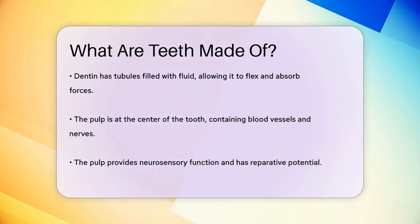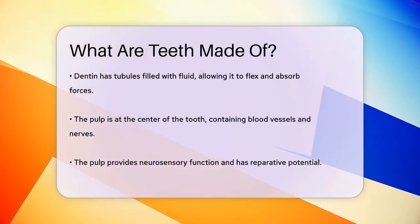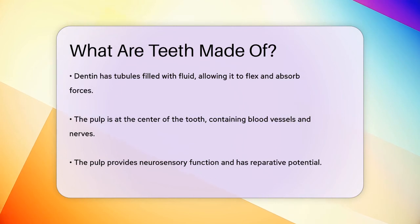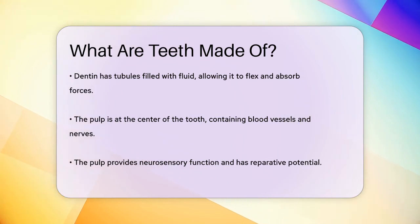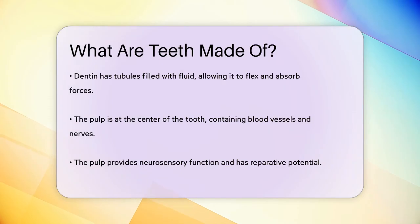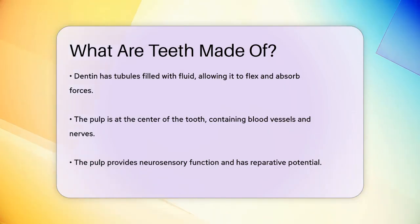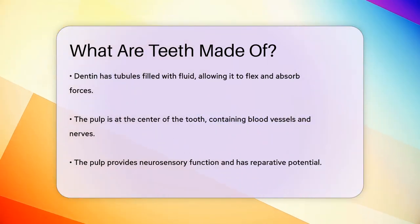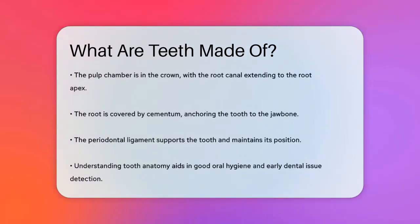At the core of the tooth is the pulp, a specialized tissue that contains blood vessels, nerves, odontoblasts, fibroblasts, and an extracellular matrix. The pulp provides the tooth with neurosensory function and reparative potential. The pulp chamber is located in the crown of the tooth, and the root canal extends from the pulp chamber down to the root apex, where the neurovascular structures enter through the apical foramen.